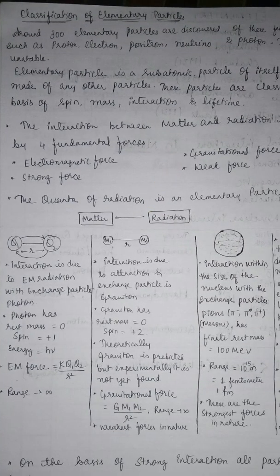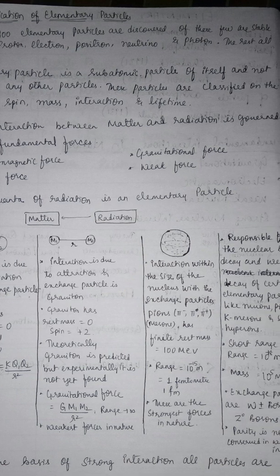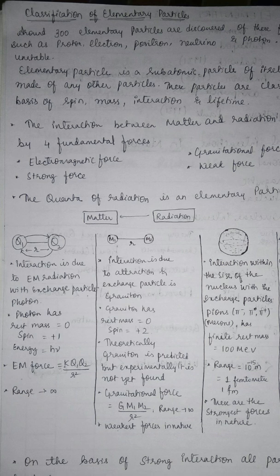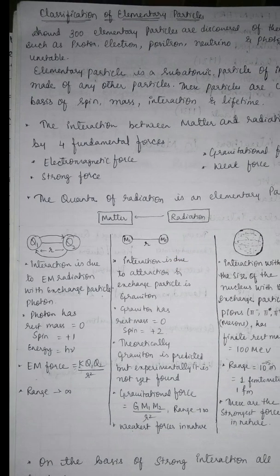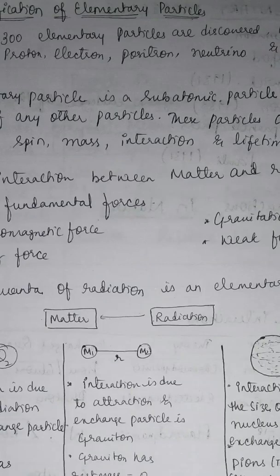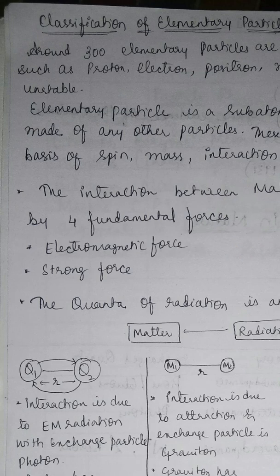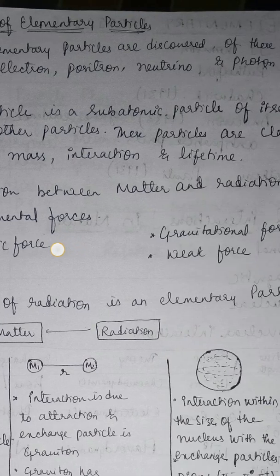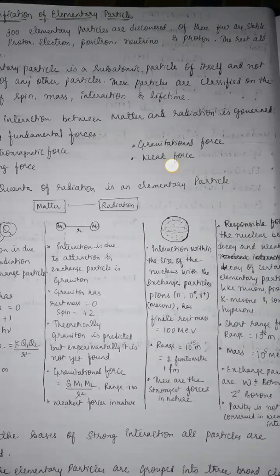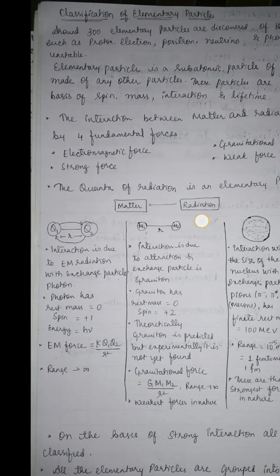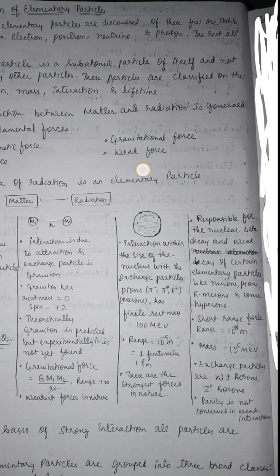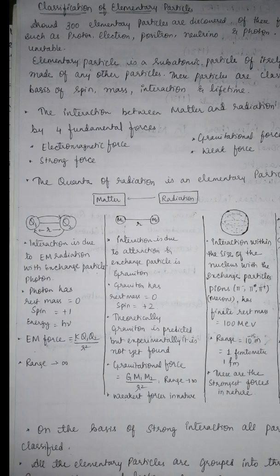Around 300 elementary particles are discovered, and of these, a few are stable such as proton, electron, positron, neutron, and photon. The rest are all unstable. These particles are classified on the basis of spin, mass, interaction, and lifetime.